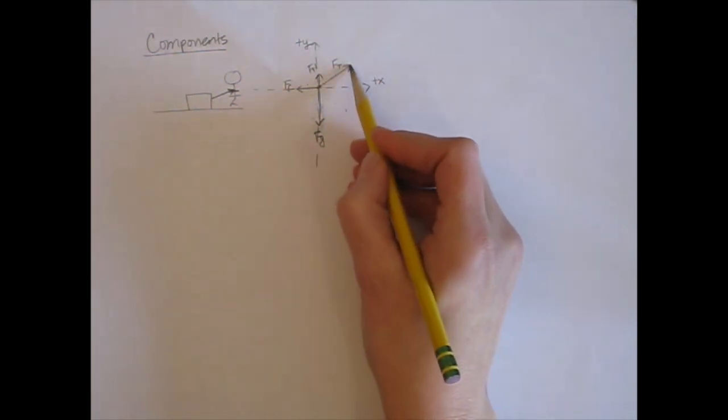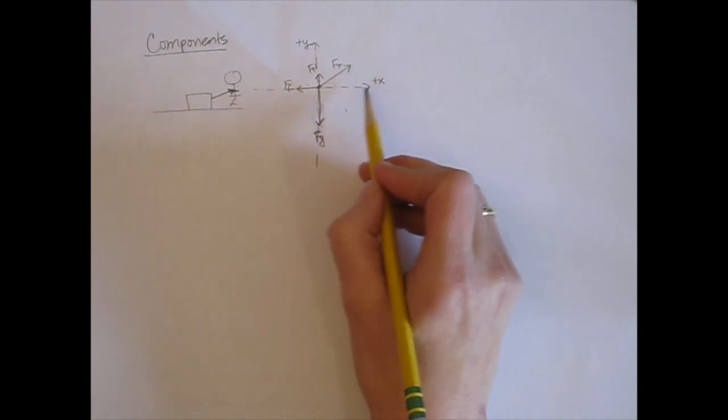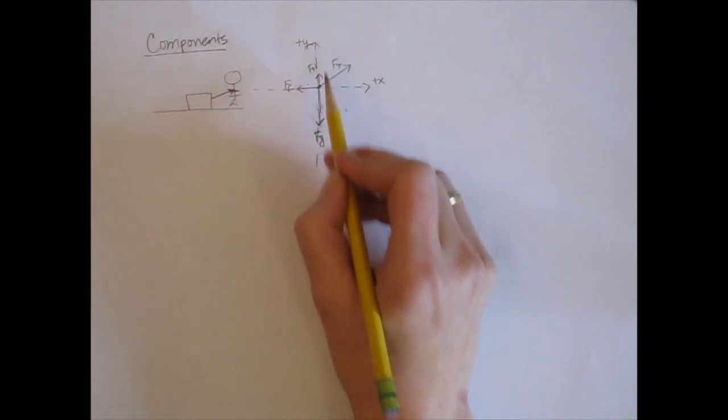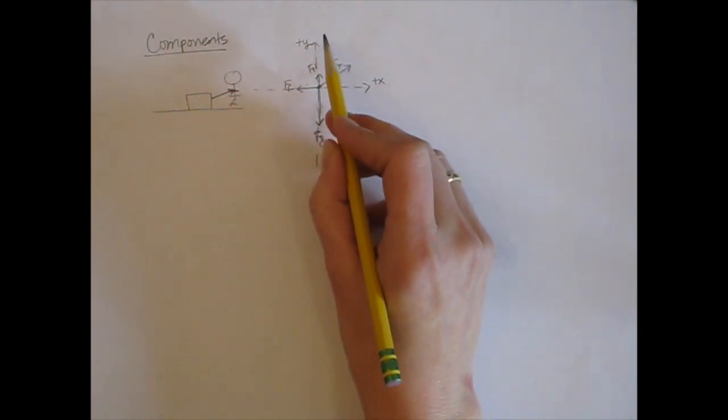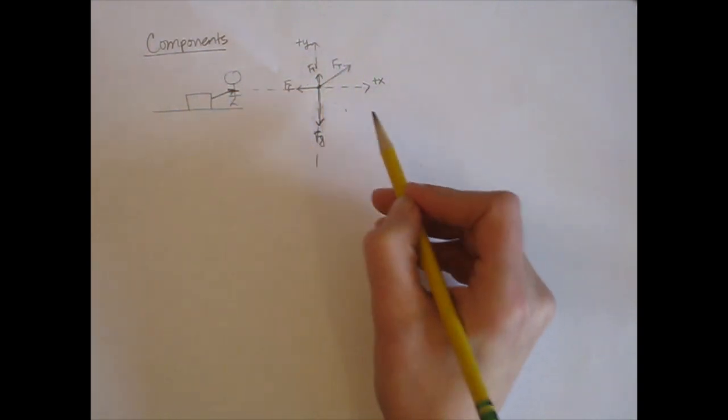This force however is pulling partly in the positive x direction and partly in the positive y direction. Can you see that the rope is pulling partly upward and partly to the right?